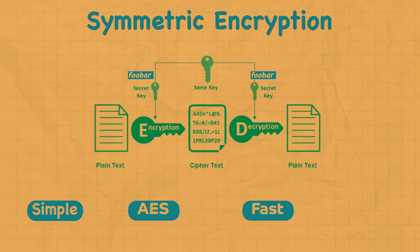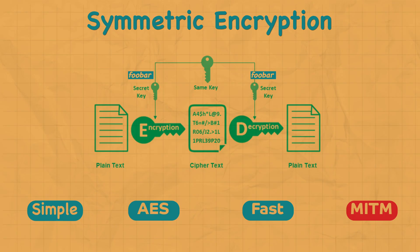The main disadvantage of symmetric encryption is that all parties involved — in our case the client and server — have to exchange the key used to encrypt the data before they can decrypt it. This is fine when communicating with a friend and you can share the key in person. But for client-server communication, how do they establish a common key? That key has to be shared over a secure communications channel — otherwise you can still end up with a MITM attack.